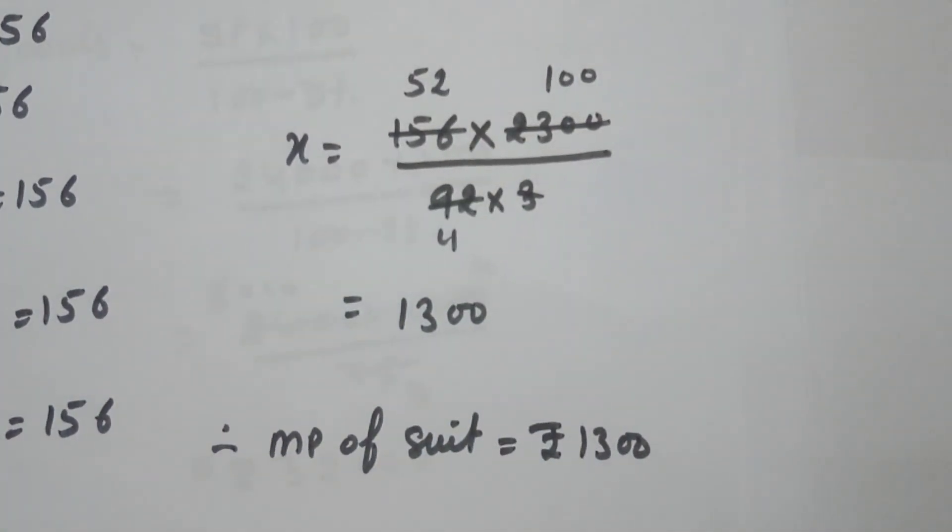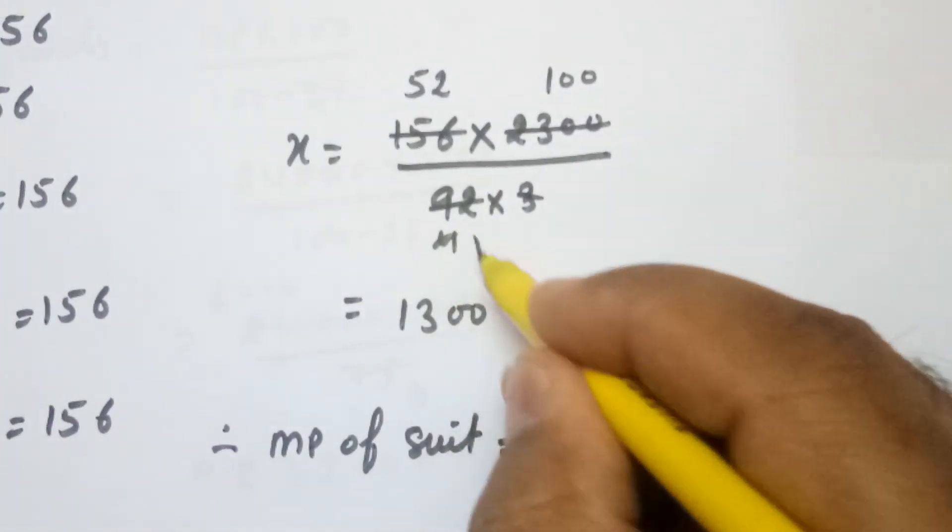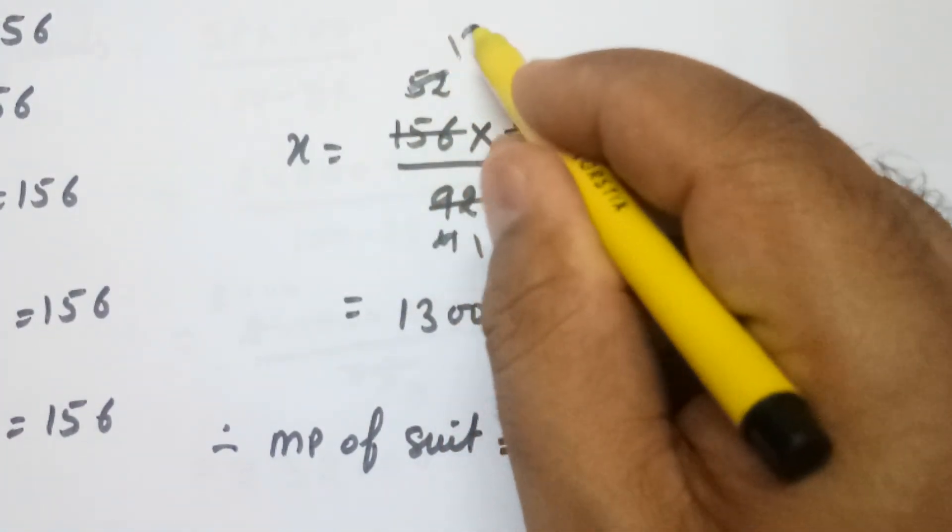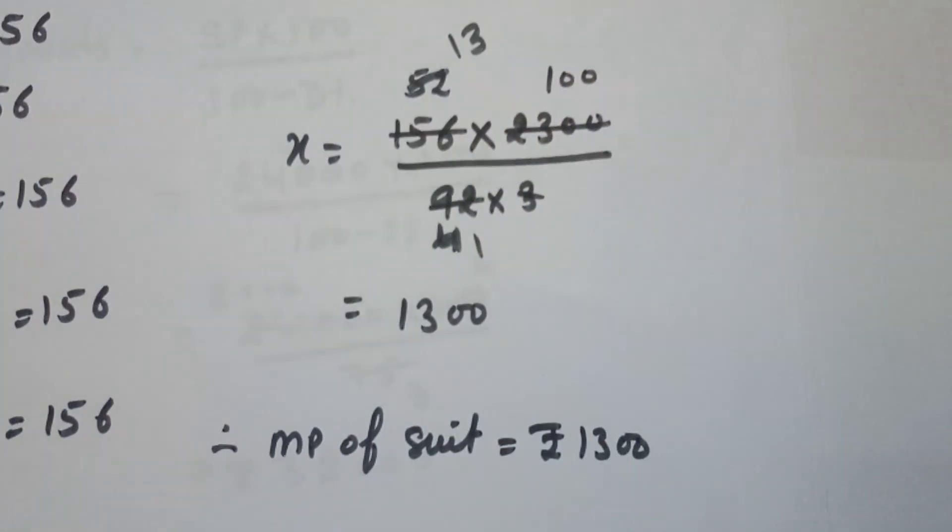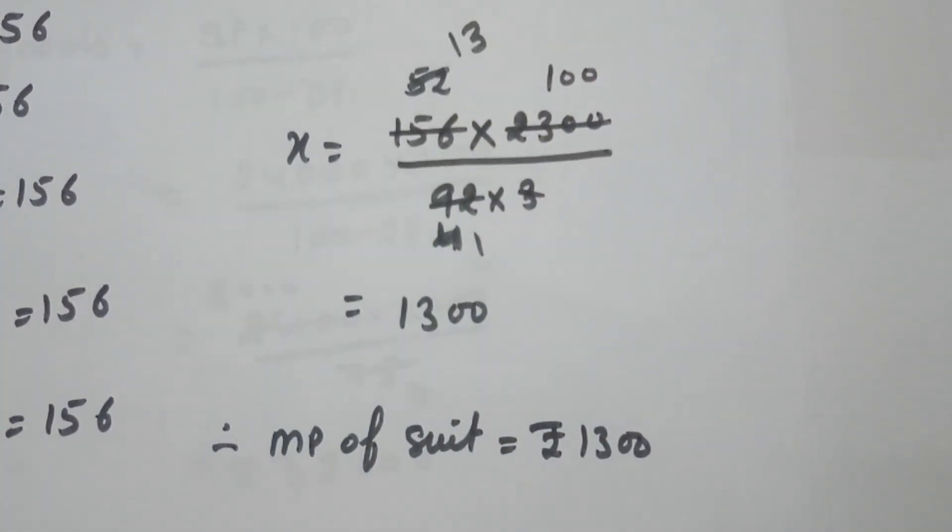So these directly cancel, 4 times 13 is 52. So 13 times 100 is 1300. The mark price of the suit is Rs 1300.